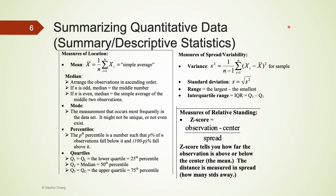This slide presents tools to summarize numerical data, also known as quantitative data. The formulas are divided into three segments: measure of location, measure of spread and variability, and measure of relative standing. For location, we have mean (also known as average), median (the middle observation), mode (the measurement occurring most frequently), percentile, and quartiles — Q1 (lower quartile, QL), Q2 (median), and Q3 (upper quartile, QU). Detailed information on these can be found in other videos on YouTube.